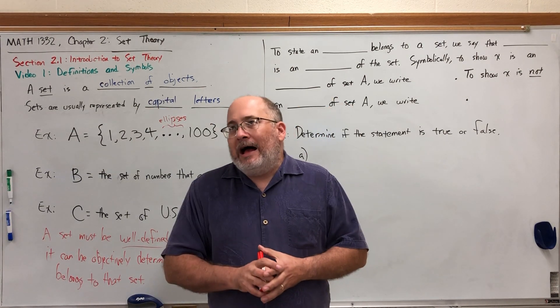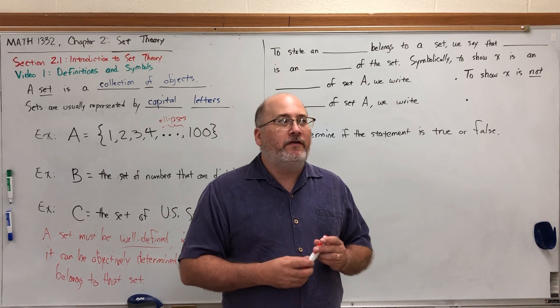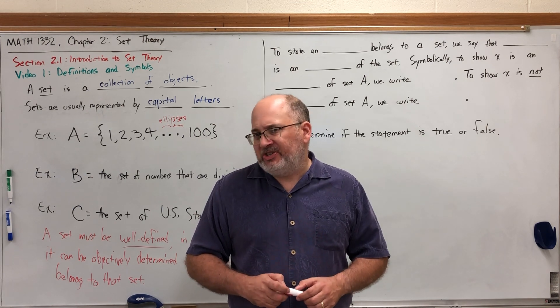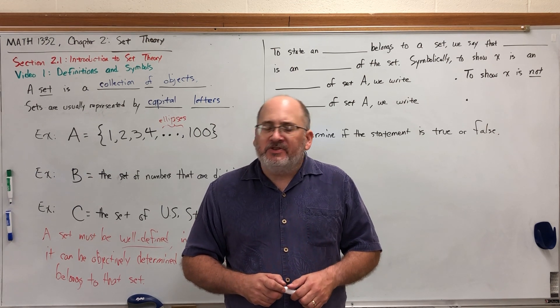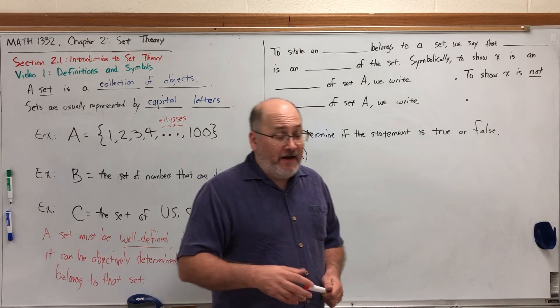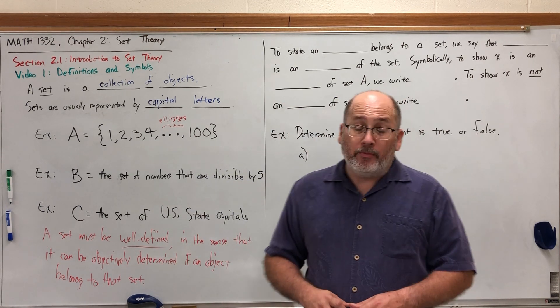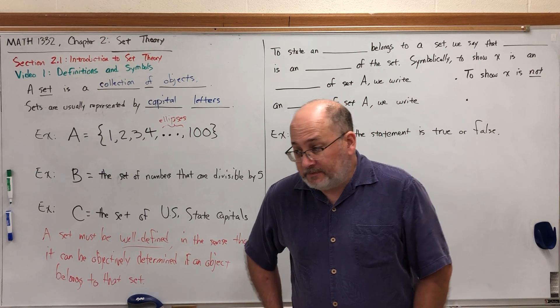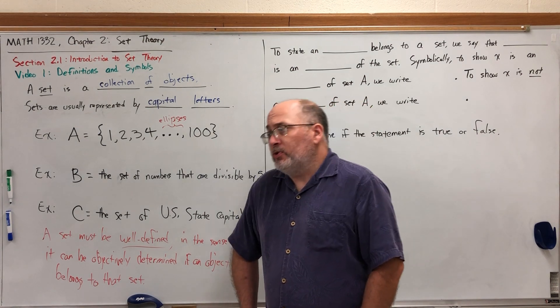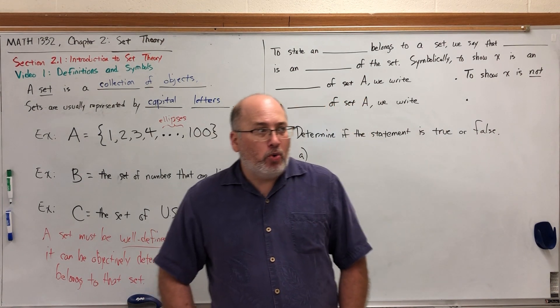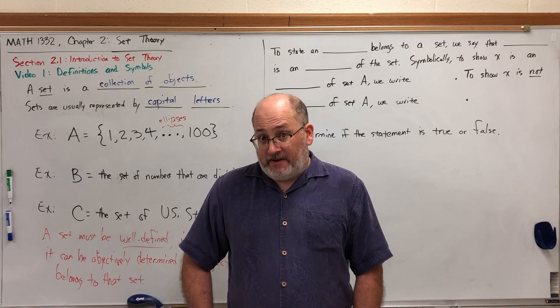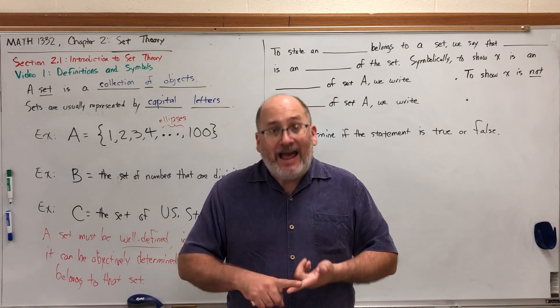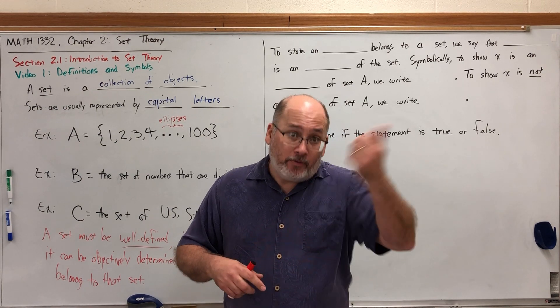What's an example of a set that's not well-defined? How about the set of beautiful women? Who gets to determine who belongs to that set? Since it's strictly based on opinion and not fact, since the decision is subjective and not objective, that would not be a well-defined set. As opposed to the set of all women who were born in Texas—that would be a well-defined set.